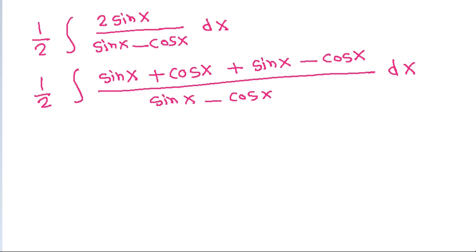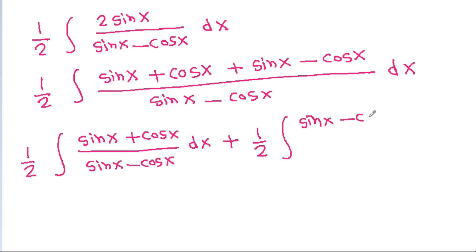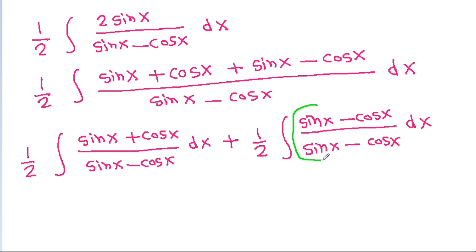So it is 1/2 times the integral of (sin(x) + cos(x)) divided by (sin(x) minus cos(x)) dx, plus the integral of (sin(x) minus cos(x)) divided by (sin(x) minus cos(x)) dx. And (sin(x) minus cos(x)) divided by (sin(x) minus cos(x)) will be 1.